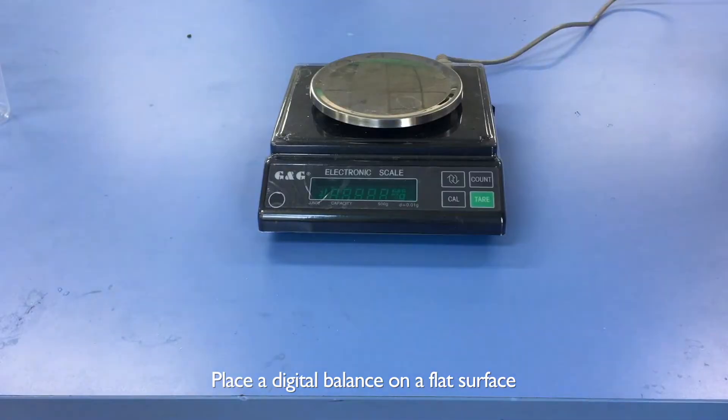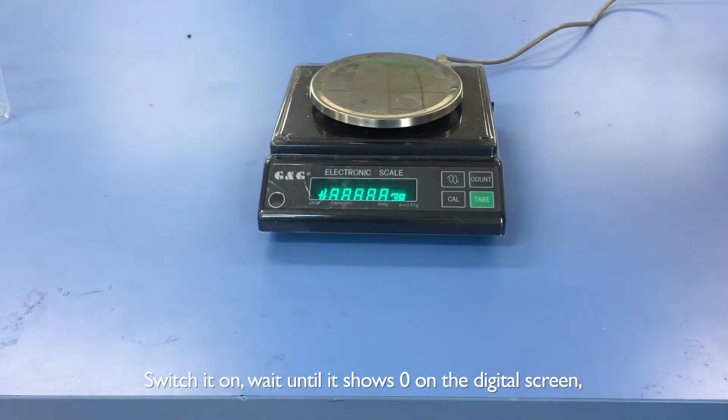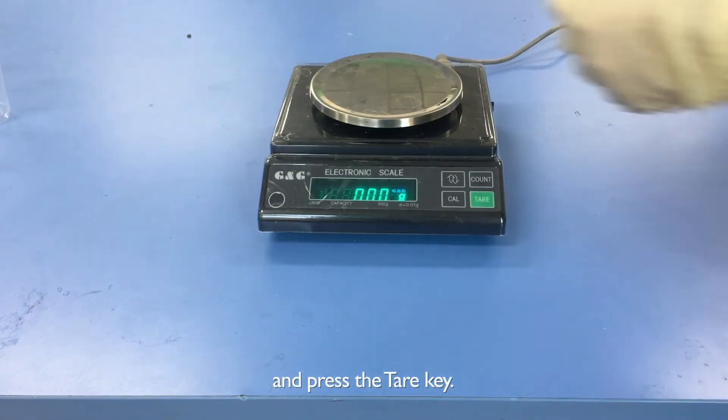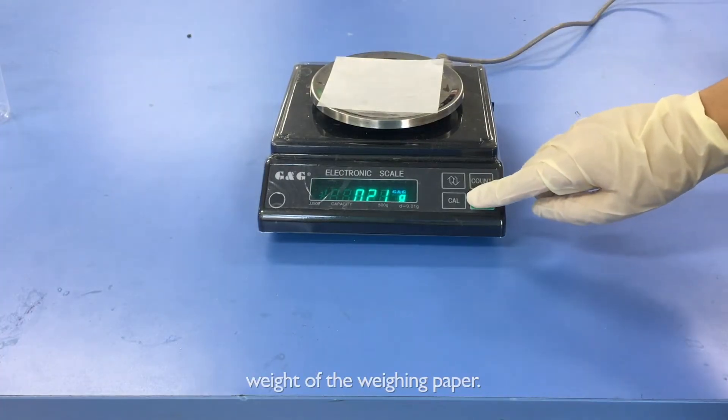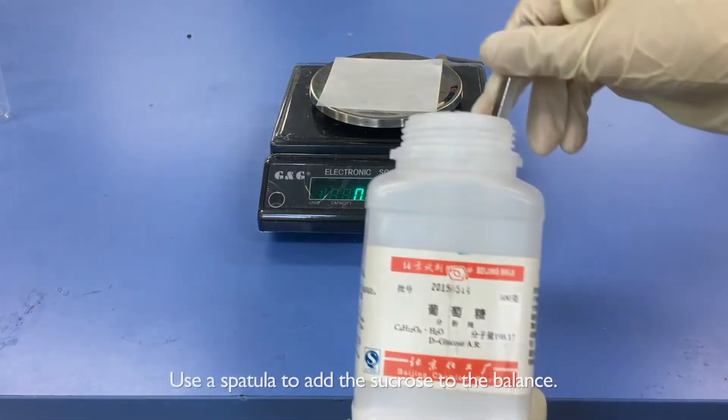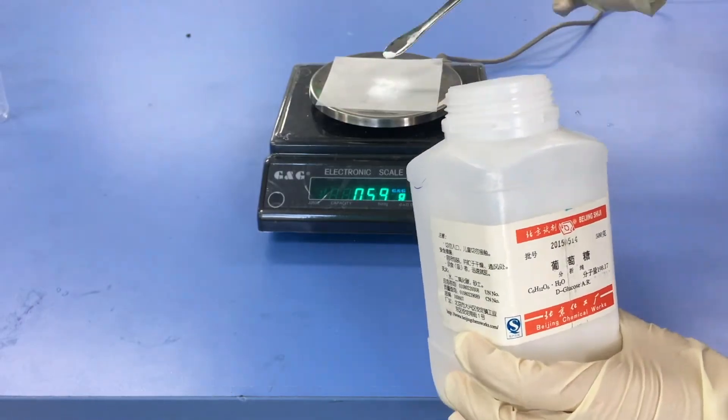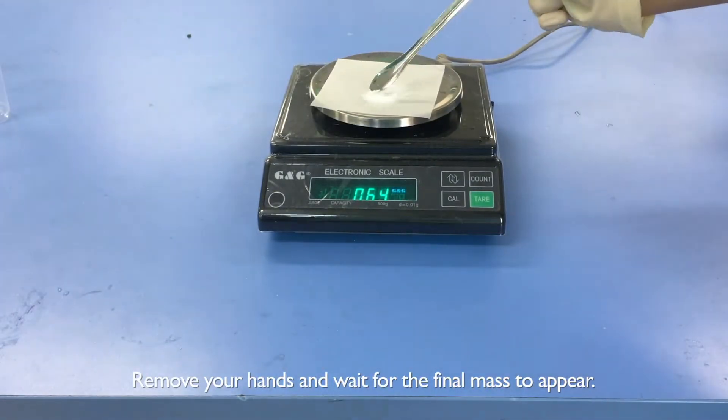Place a balance on a flat surface in order to measure the sucrose accurately. Switch it on, wait until it shows zeros on the digital screen, and press the tare key. Put the weighing paper on the balance and press the tare key again to deduct the weight of the weighing paper. Use a spatula to add the sucrose to the balance. Remove your hands and wait for the final mass to appear.